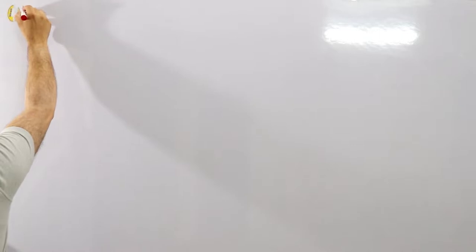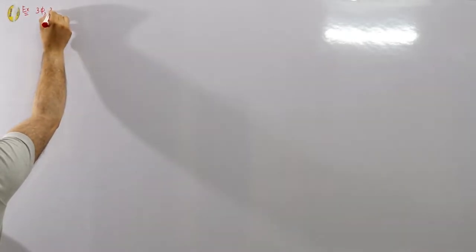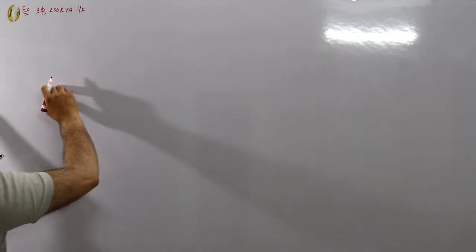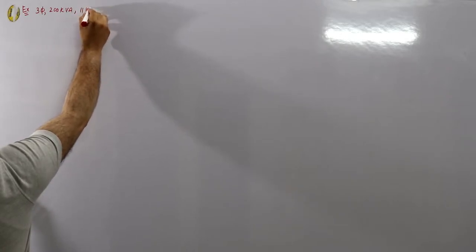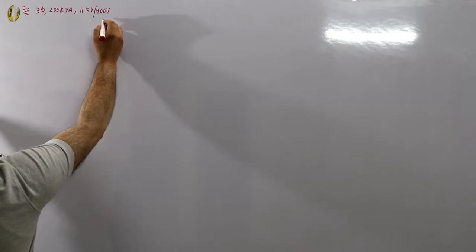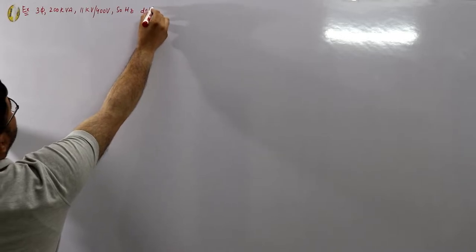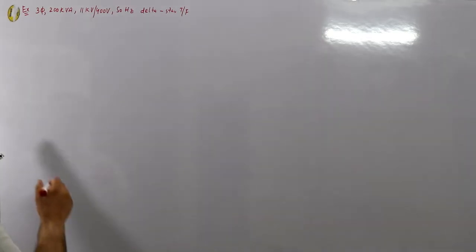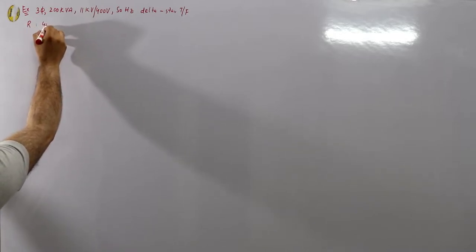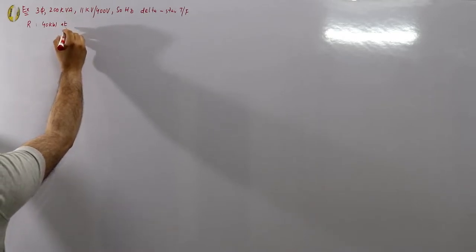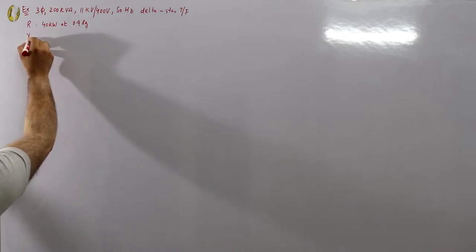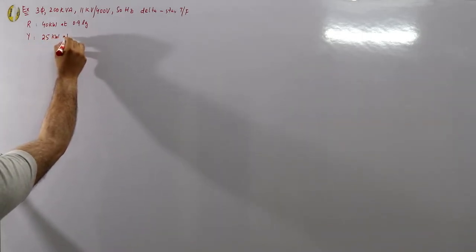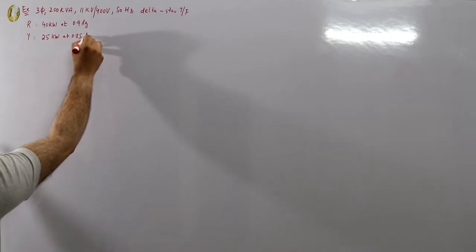Example number one: a three-phase 200 kVA, 11 kilovolts to 400 volts, 50 Hz delta-to-star transformer in a distribution system supplies the following single-phase loads. For the red phase: 40 kilowatts at power factor 0.9 lagging. For the yellow phase: 25 kilowatts at 0.85 power factor lagging.